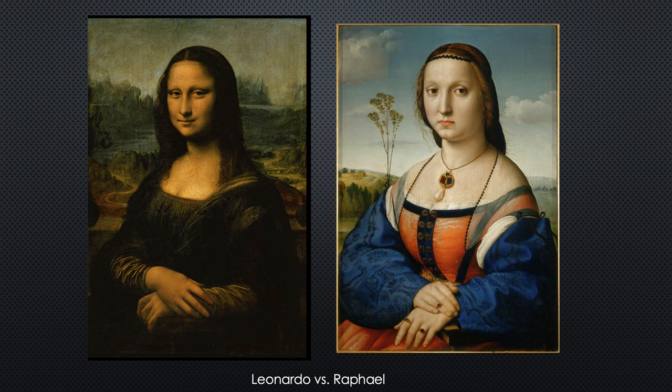Here are two paintings side by side for comparison. Raphael totally emulated Leonardo — Mona Lisa on the left and a portrait by Raphael on the right. You can see many similarities: the pose, the sfumato modeling, the background. In early Renaissance Italian art, portraits of men and women were shown in profile, but Leonardo and Raphael popularized the three-quarter view — where a figure is not staring straight ahead but turned slightly — and this became standard in the High Renaissance.